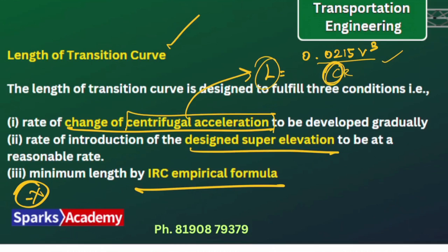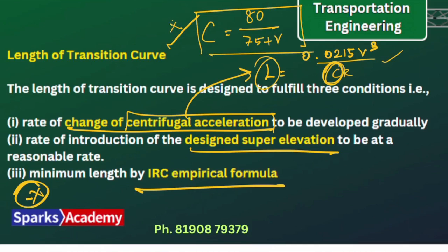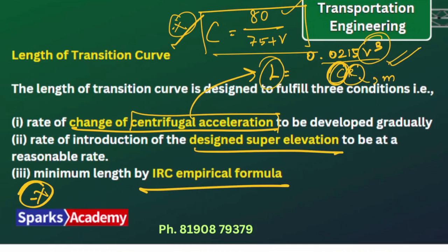In the centrifugal acceleration method, there is a formula: C = 80 divided by (75 + V). This is a very important formula — if you are given velocity, you can calculate the centrifugal acceleration value and from that derive the length of the transition curve.